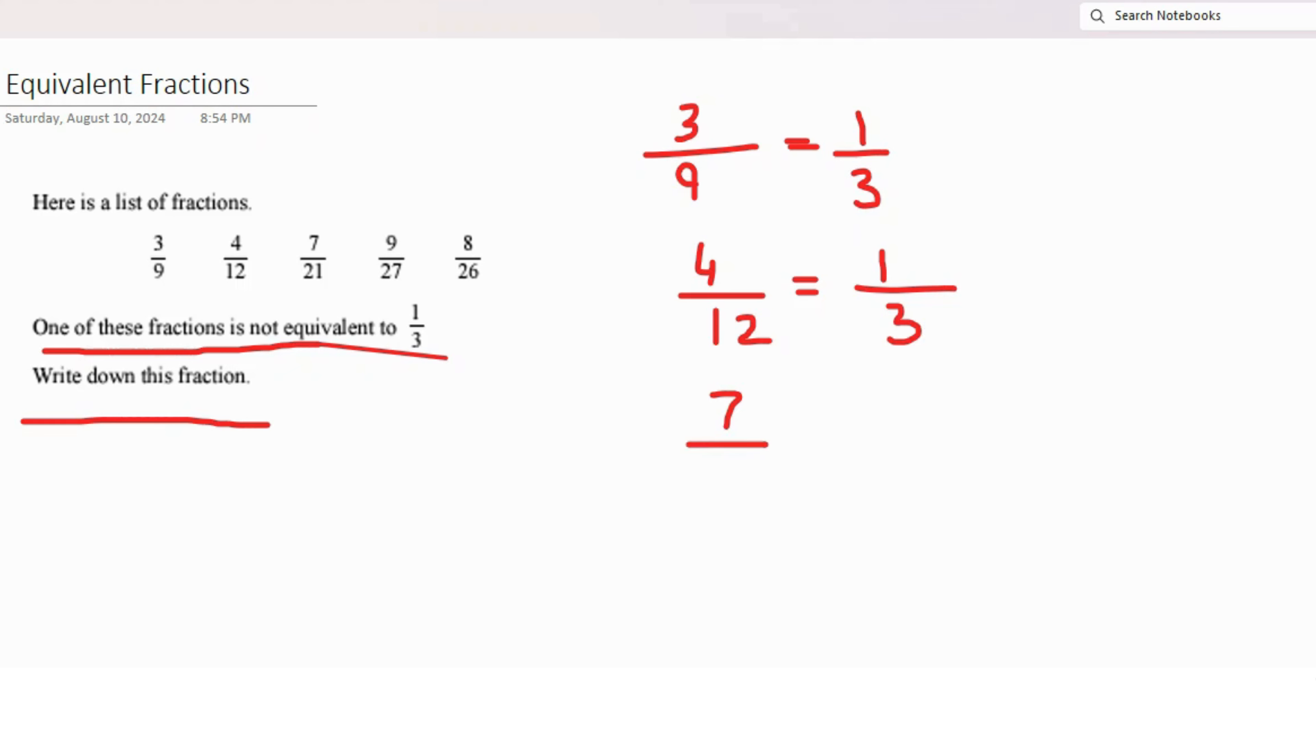Next we have 7 out of 21. You need to see where we get 7 and where we get 21. This would be again 1 out of 3.